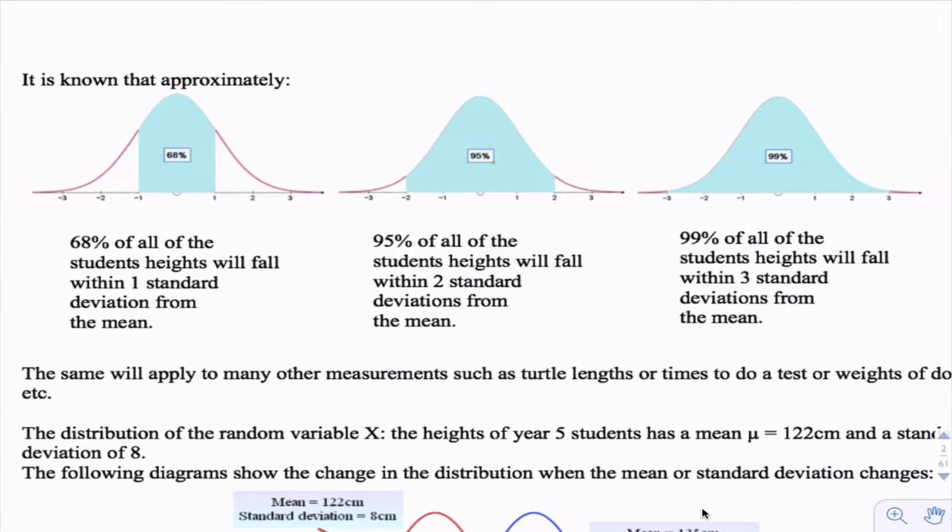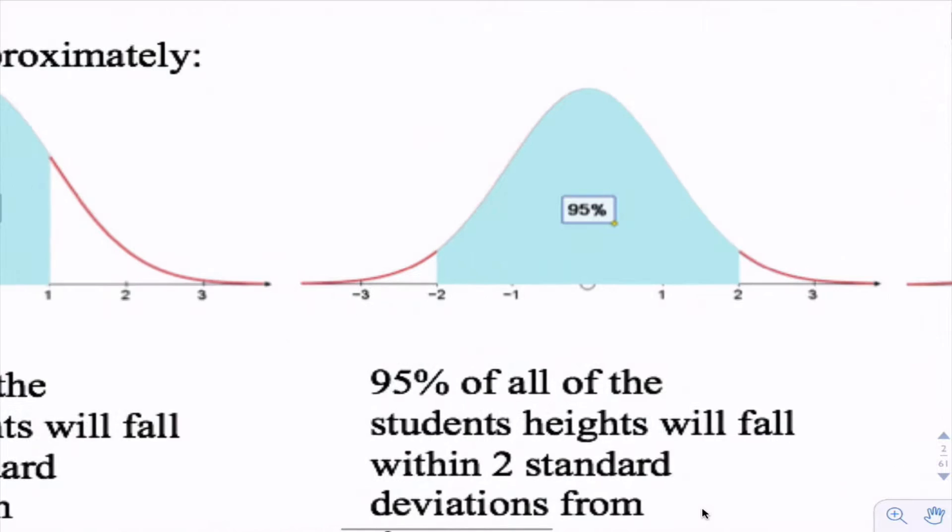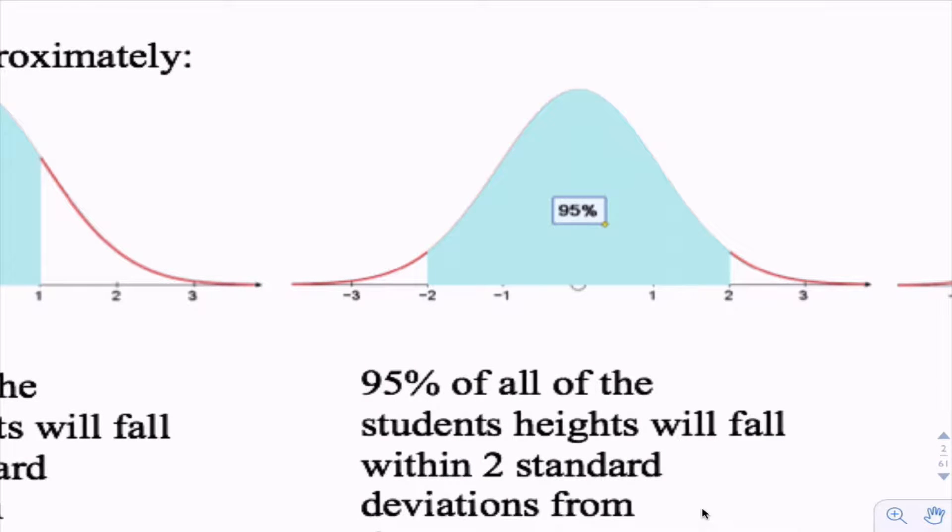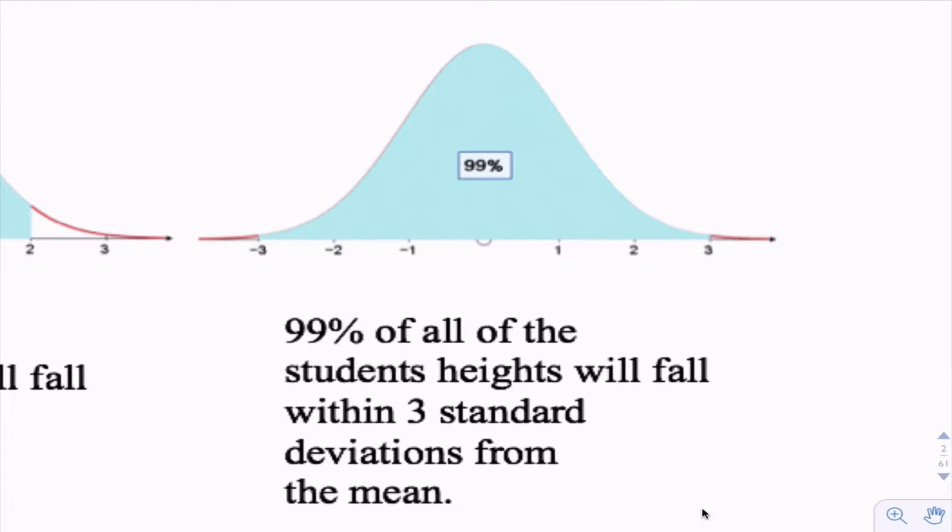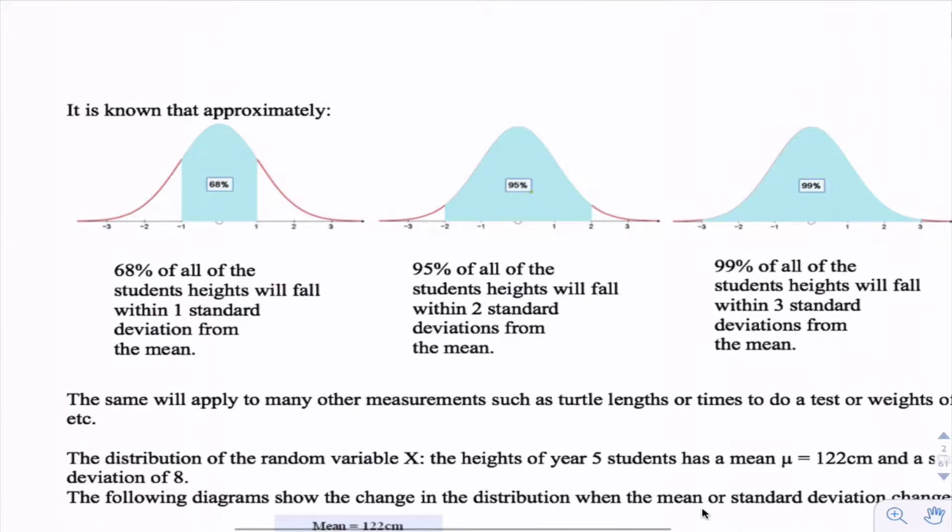Another thing we know about the normal distribution: 68% of all heights or weights fall within one standard deviation from the mean, within two standard deviations of the mean we have about 95% of all values, and within three standard deviations 99% of all possible values. This gives us a rough guide whether data is appropriately modeled by a normal distribution.